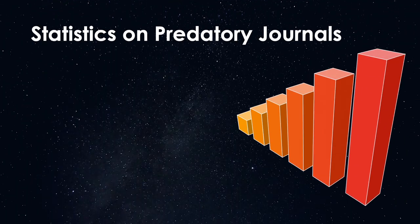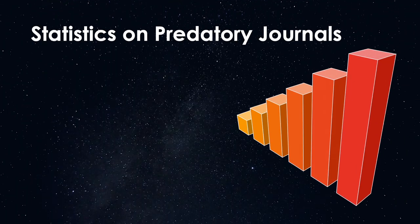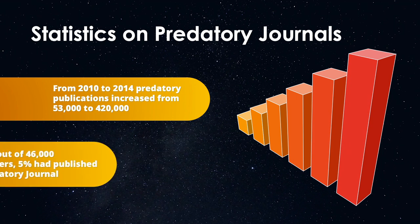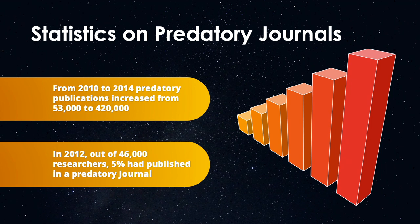Predatory journals and publishers continue to flourish in academia. One study showed that from 2010 to 2014, the number of predatory publications increased from 53,000 to 420,000. In 2012, a study performed in Italy showed that out of 46,000 researchers, 5% of them had published in a predatory journal, either because they were unaware that the journal was predatory, or because of the pressure to publish.